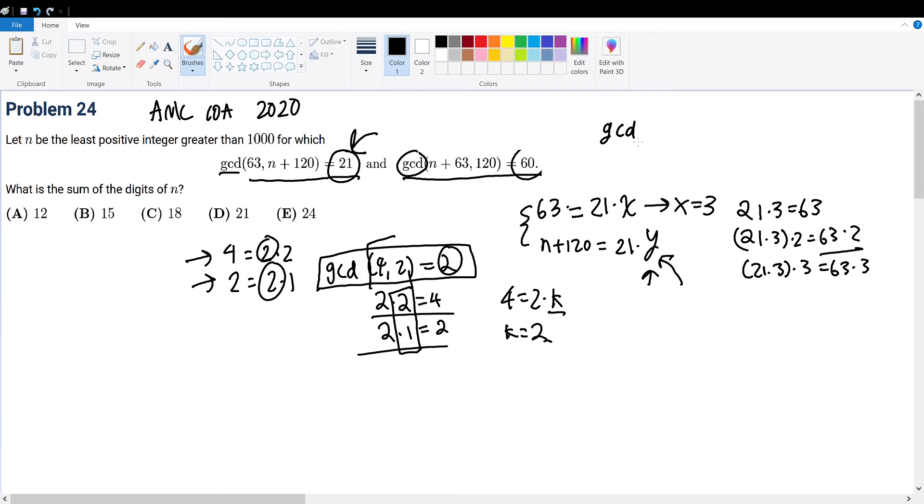That is because the greatest common divisor of some number with a multiple of that same number will be equal to that number. And 21 times y, a multiple of three, will result in a greatest common divisor to be 63 because n plus 120 will now be then divisible by 63. And think about why this checks out. 21 times three is 63. Three times two is six. Three times three is nine. Three, six, nine, 12. And this pattern goes on. They're all multiples of three. Three times k. K is starting from one to two to three and all the way and so on. So this must mean that y cannot be divisible by three.